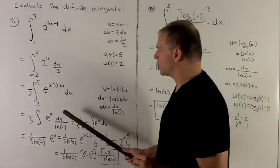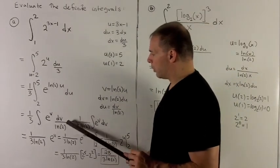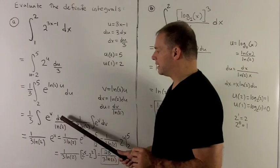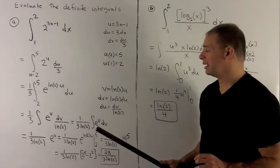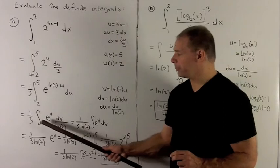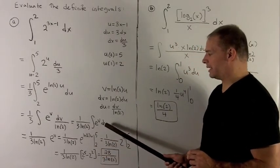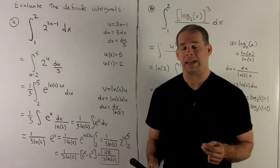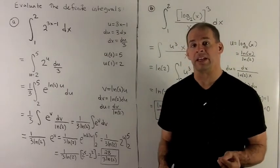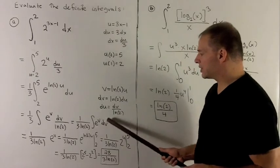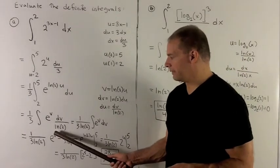When we do our v substitution, we're going to wind up with e to the v dv, and natural log of 2 in the bottom. That natural log of 2 can be pushed to the outside. And now I'm just looking at e to the v dv, and that's great. Any derivative of e to the v is just itself. So any derivative of this is just e to the v.